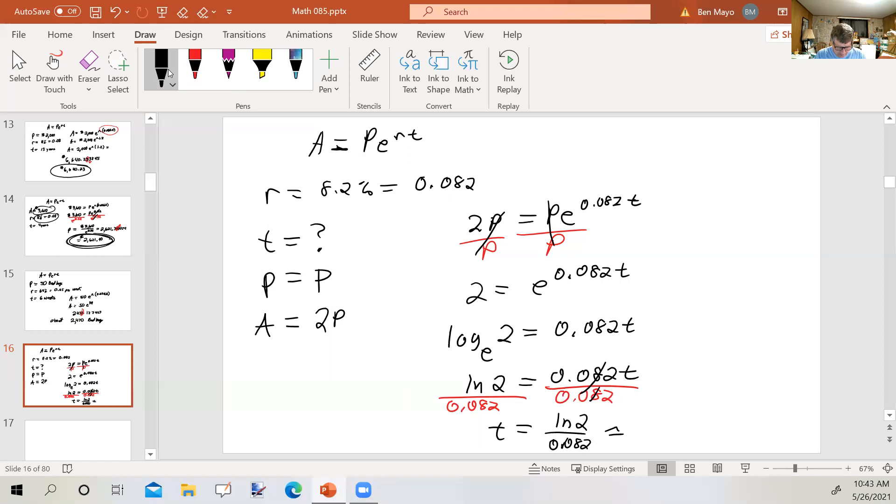I'm trying to solve ultimately for T, for time. So the next step is to divide both sides by the coefficient of T. So T equals the natural log of 2 divided by 0.082. The natural log of 2 divided by 0.082, I get 8.453014397, and we're going to say about 8.5 years. Typically, they should tell you in the problem where to round.